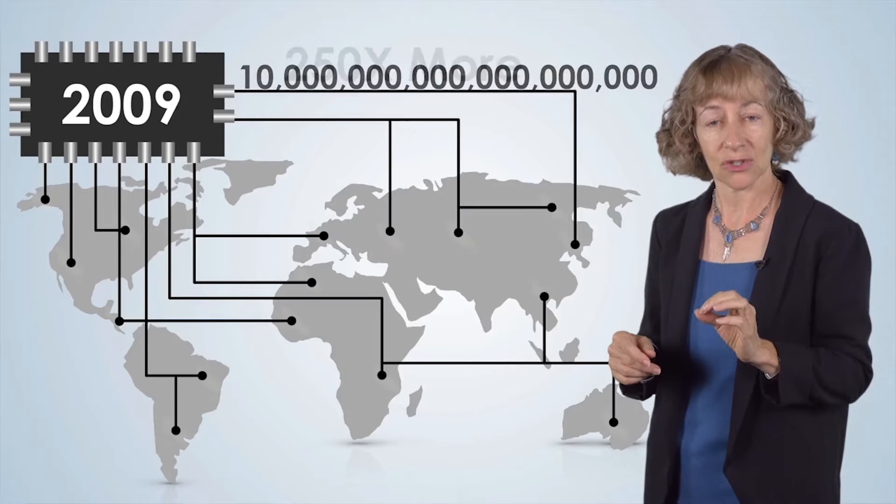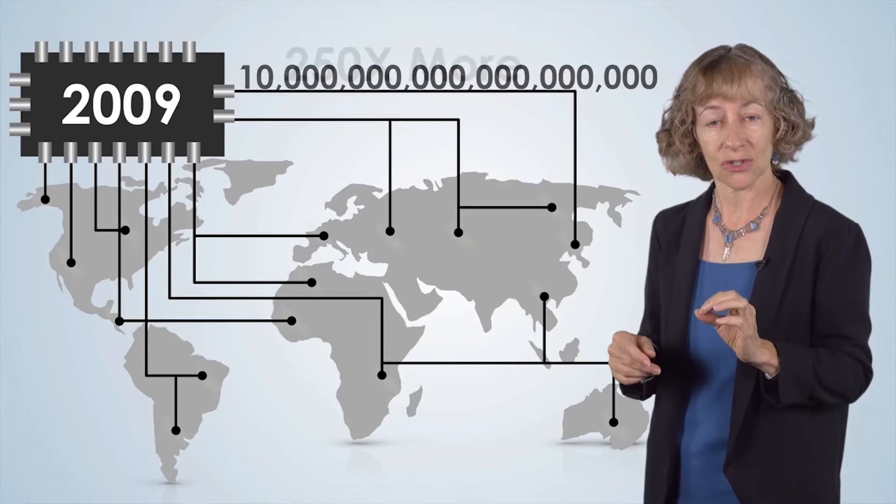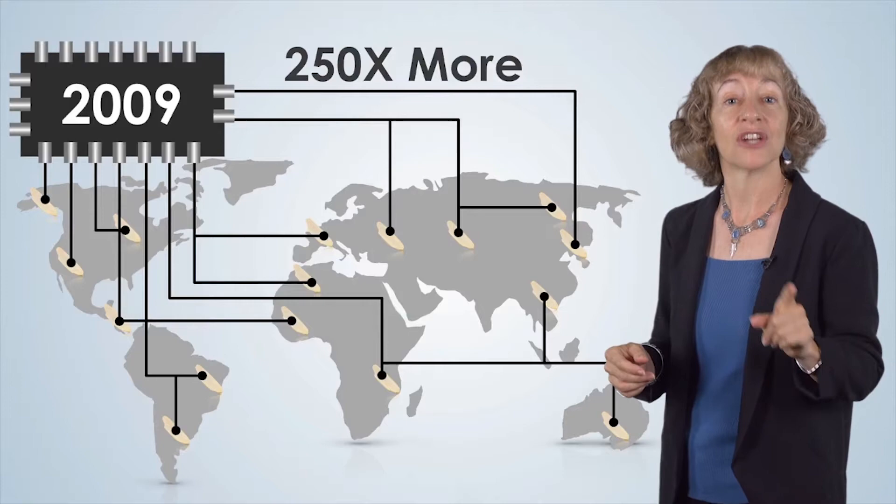Those 10 quintillion transistors are 250 times the number of grains of rice that were eaten worldwide that year. And for the price to produce a single grain of rice, we can produce 125,000 transistors.